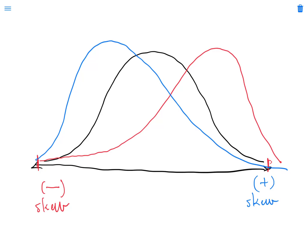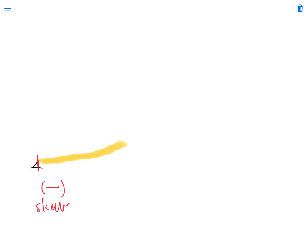So skewness is just a measure of how long these tails are that extend in either direction, so it's just a measure of how big that tail is. And if we look at the equation, let me show you how that works.